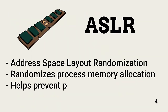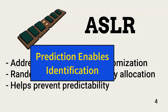ASLR, address space layout randomization, is another memory security control. ASLR randomizes the memory locations used by processes. It mitigates the risk associated with the use of predictable memory address locations. If an attacker can predict application memory locations, she is better able to insert malicious code or steal sensitive information.